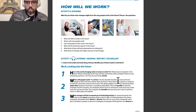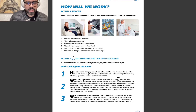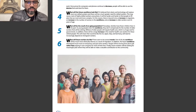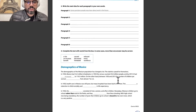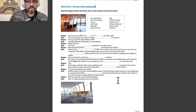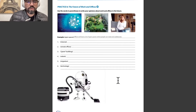How will we work — this is point number three. Activity number six is speaking. Activity number seven covers listening, reading, writing, and vocabulary on work and looking into the future. We have some paragraphs here. Practice number five is 'the new office building,' and practice number six is 'the future of work and office.'